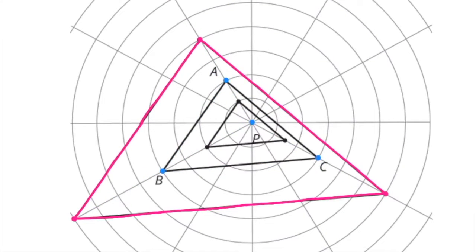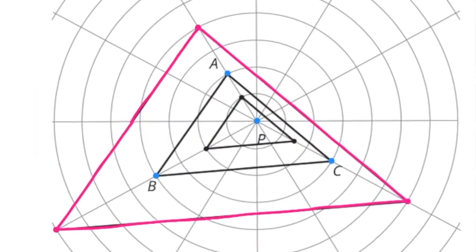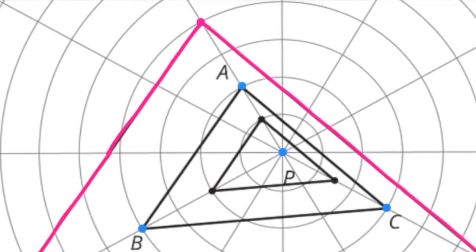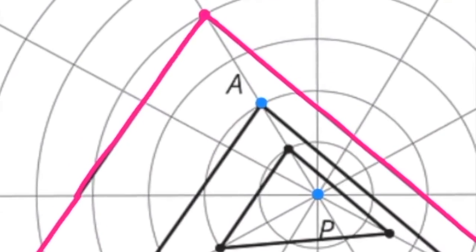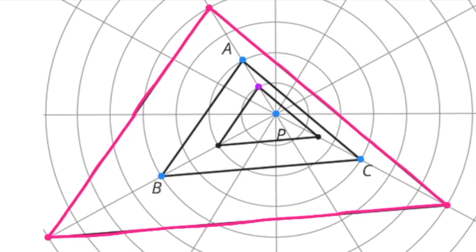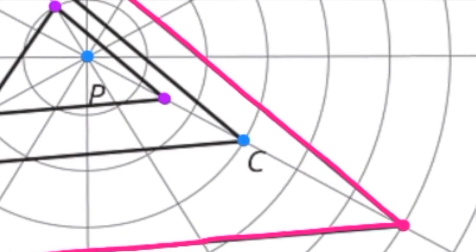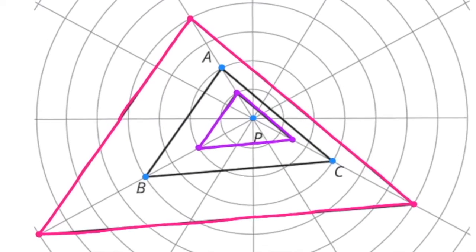Draw the triangle connecting the three new points. Part B: Dilate each vertex of triangle ABC using P as the center of dilation and a scale factor of one-half. This next triangle has a scale factor of one-half. So we need to start at center point P and go halfway to point A, then halfway to point B, then halfway to point C, placing new points at each location. Draw the triangle connecting the three new points.